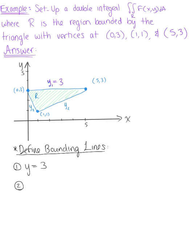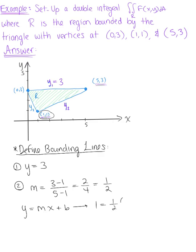For our second curve y₂, we need to find the equation of the line with endpoints at (5,3) and (1,1). We find the slope: (3−1)/(5−1) = 2/4 = 1/2. Using slope-intercept form y = mx + b with the point (1,1) and slope 1/2, we solve for b and get b = 1/2. So our second bounding line is y₂ = (1/2)x + 1/2.